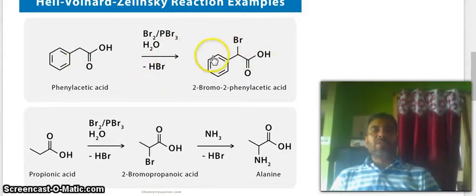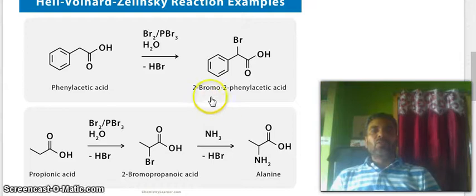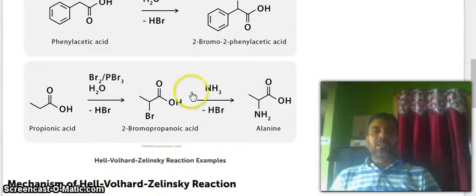Now, hydrogen replaced by bromine. 2-bromo-2-phenylacetic acid. In this example, this is propanoic acid.